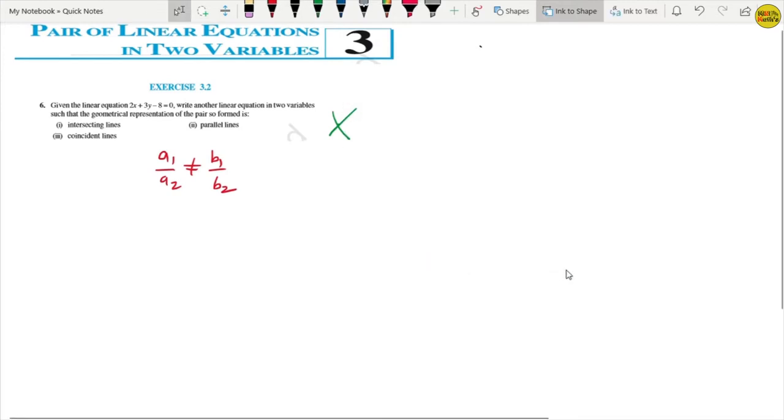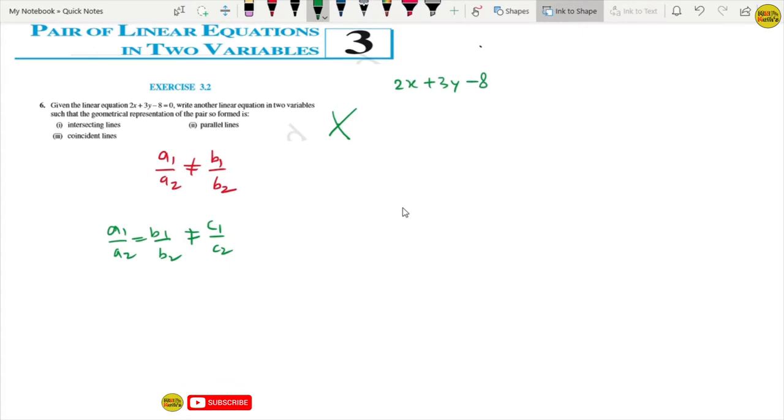I know the equation is a1 by a2 equals to b1 by b2 but not equals to c1 by c2. This should happen. We have the equation 2x plus 3y minus 8 equals to 0. Now we have the equation.